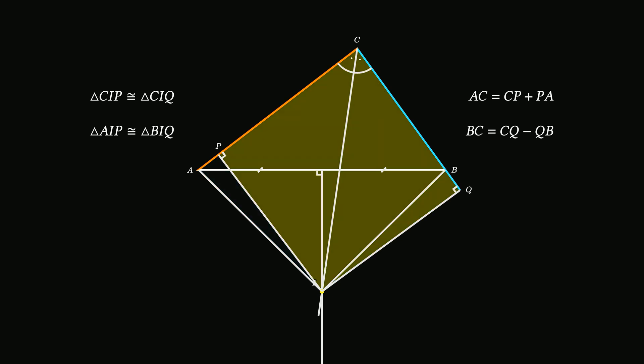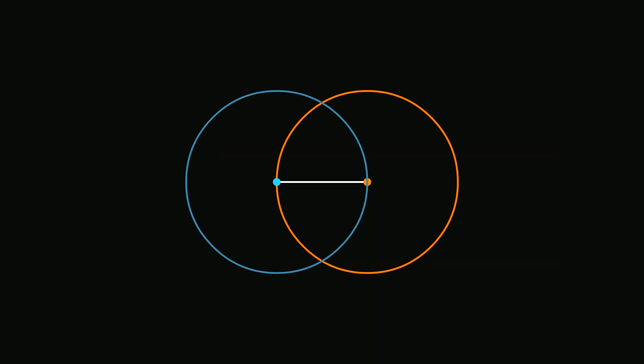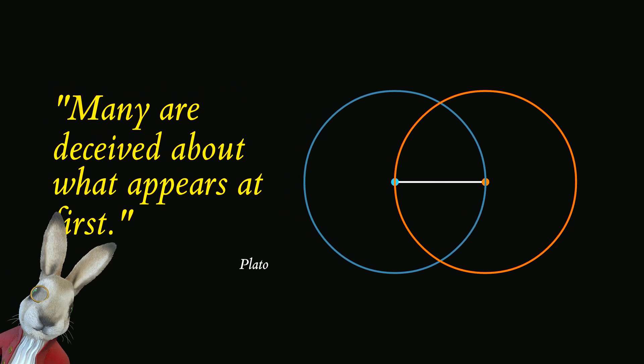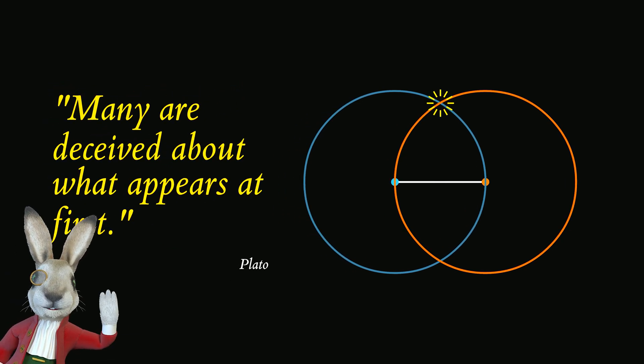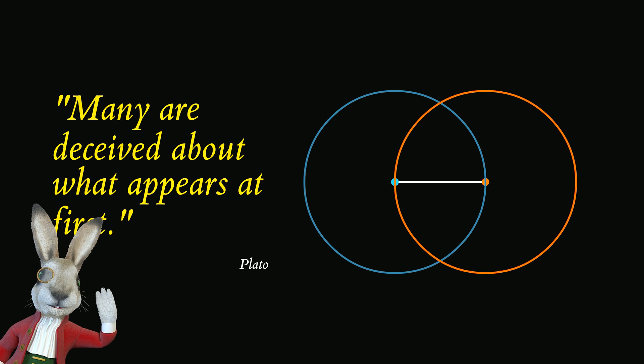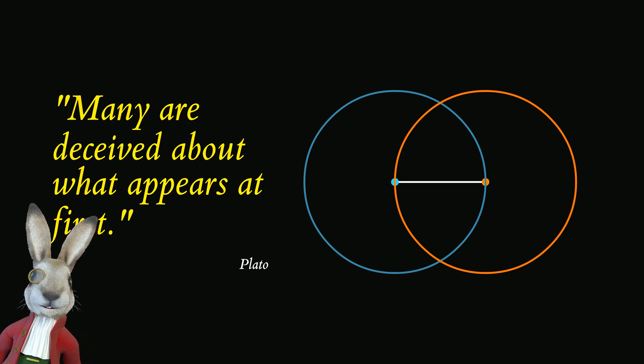The moral of the story is that diagrams may be misleading. So, assuming the intersection point based on the diagram is a major error that invalidates any proof including Euclid's proof of proposition one.